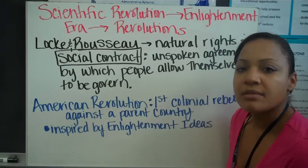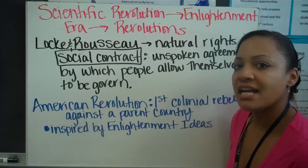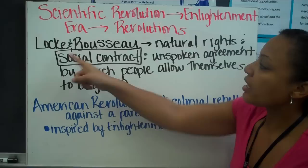Looking at the Scientific Revolution, it is going to lead to the Enlightenment Era, which we already talked about last week. The Enlightenment Era is going to consist of what is called the Age of Reason, where people are going to start brainstorming different ideas on how they think society and the government should run.